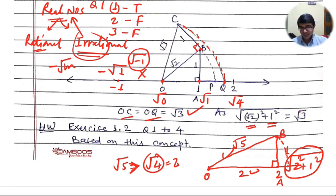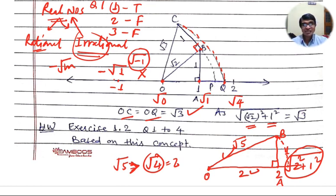Question number 4 is a classroom activity — the square root spiral. If you want that, just comment below and I will make a separate video for it. Thanks for watching.